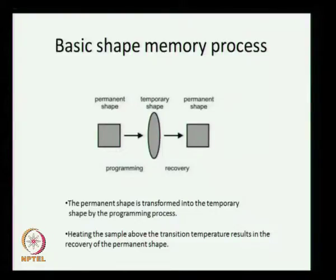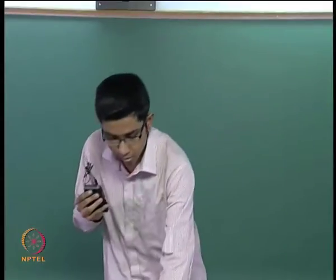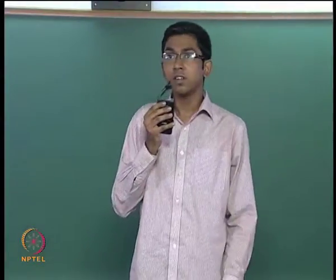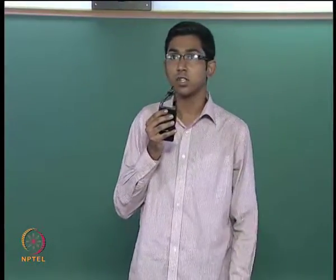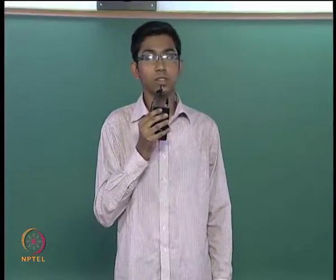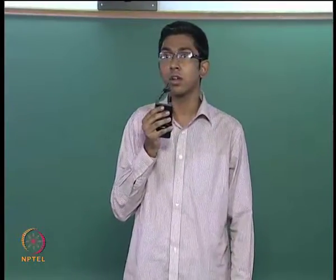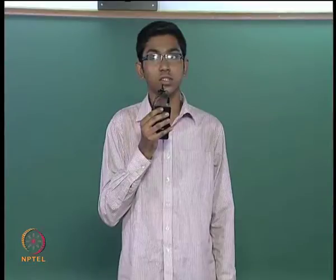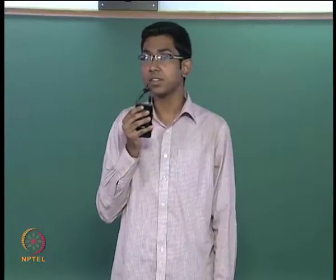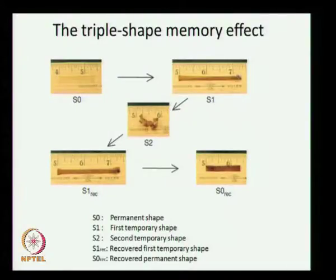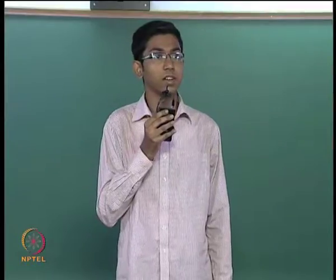In this case, the sample is transformed into the temporary shape by the programming process and is later recovered by heating the sample above the transition temperature. The triple shape memory effect as shown in this slide is demonstrated by those polymer systems which possess two separate phase transitions, and the temporary shapes S1 and S2 exist above and between these transition temperatures.